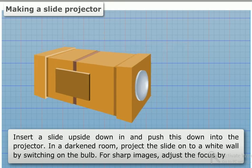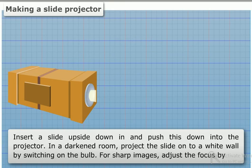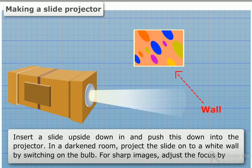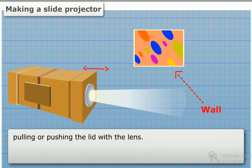In a darkened room, project the slide onto a white wall by switching on the bulb. For sharp images, adjust the focus by pulling or pushing the lid with the lens.